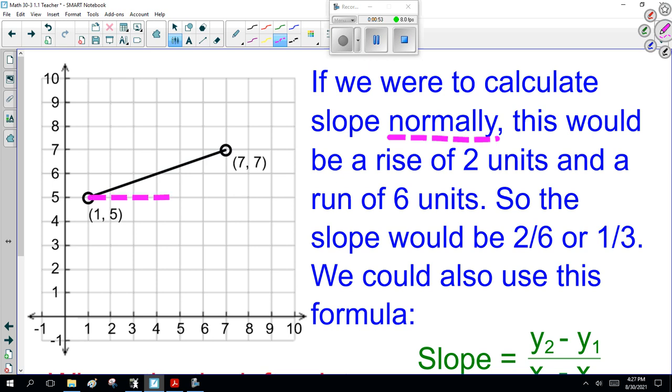How did I do that? Well, here's my rise. So I run here: 1, 2, 3, 4, 5, 6, and a rise going up 2. So that's where the 2 and 6 came from.